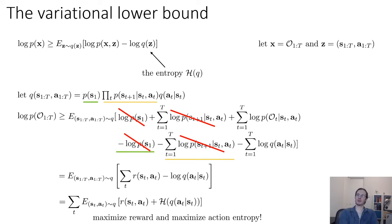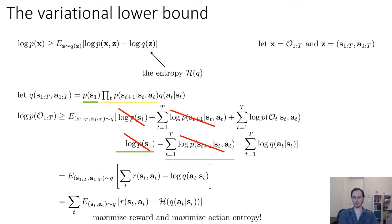Q has the same initial state distribution and transition probabilities as the original problem, so this is precisely the expected reward — our original reinforcement learning objective — plus additional entropy terms. The entropy terms serve to justify why you don't want just the single optimal solution but also some stochastic behavior that models slightly suboptimal actions. Just by applying the variational lower bound, we recovered an objective that looks very much like the original RL objective but with these additional entropy terms.